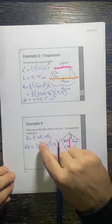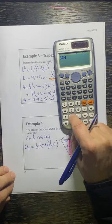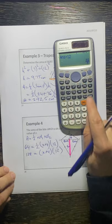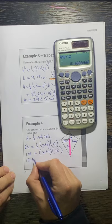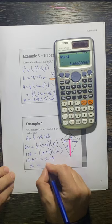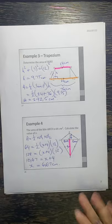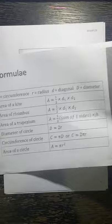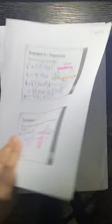Multiply both sides by 2 to get rid of the half: 128 = (x + 4) × 12. Divide both sides by 12 and we get approximately 10.67 = x + 4. Take 4 to the other side and x = 6.67 centimeters. That was just using the formula, and this is why it's so important to know these formulas off by heart — they won't be given to you. For homework, complete exercise 15.2 numbers 1c, 2h, then numbers 3, 4, and 5. Thanks, enjoy!